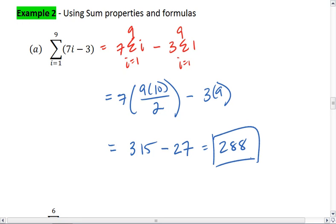So this process of using your properties and your formulas will make it much easier to calculate these sums than actually finding the first 9 terms and adding them together. Let's look at example B.